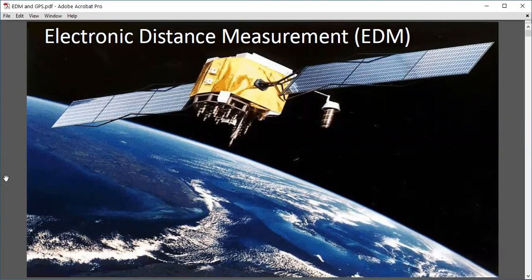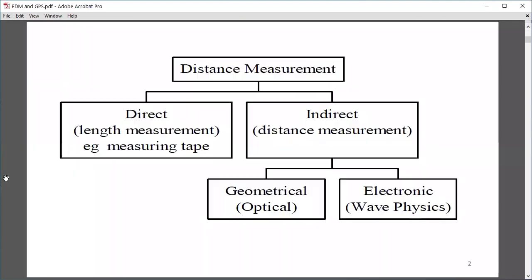Today's lecture is related to electronic distance measurement, EDM and GPS. Distance measurement has two types: direct measurement and indirect measurement. In direct measurement, we measure distance with the help of tape and chain.